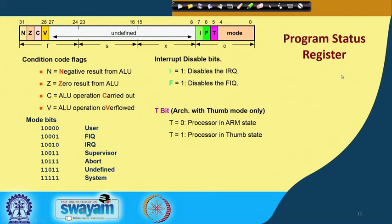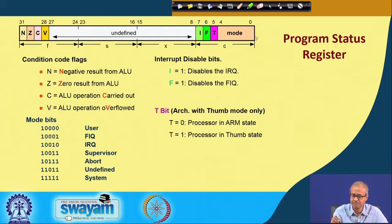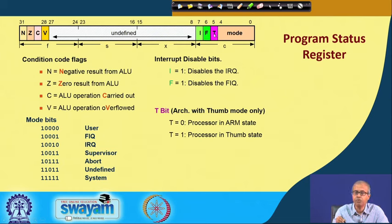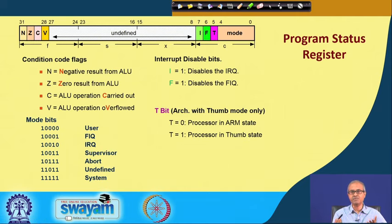The CPSR picture again: the last 5 bits store the mode. The specific bit combinations are defined — for example, 10000 means user mode, 10001 is FIQ mode, and so on. The condition code flags are negative, zero, carry, and overflow. The interrupt disable bits, if set to 1, disable the corresponding interrupts. The thumb mode bit indicates whether you are in ARM mode (bit = 0) or thumb mode (bit = 1), selecting between 32-bit and 16-bit execution mode.